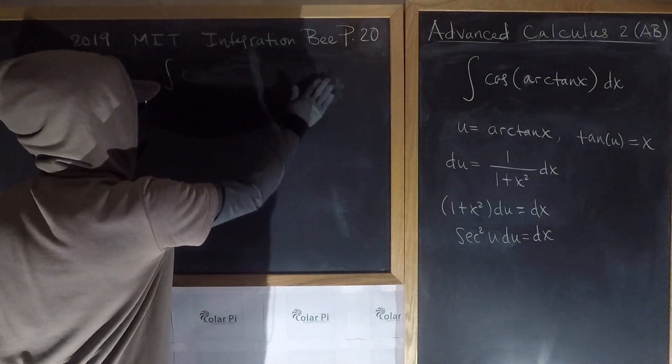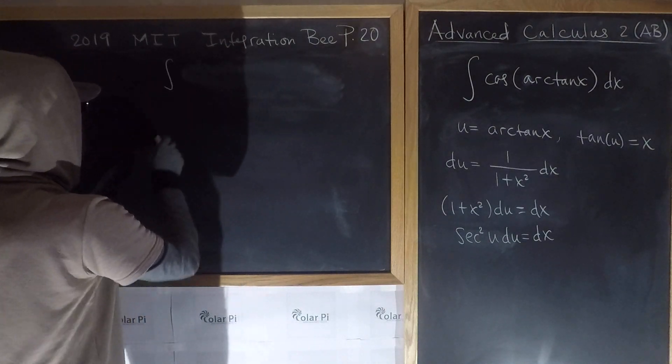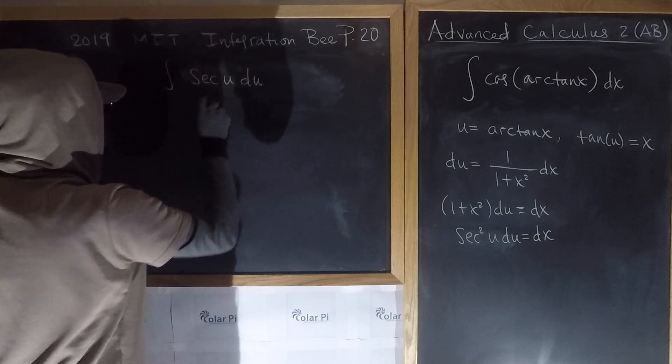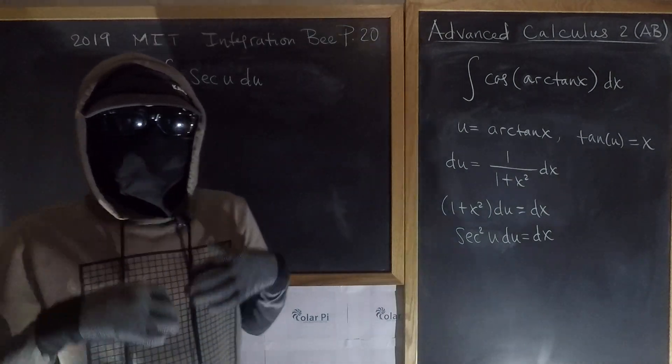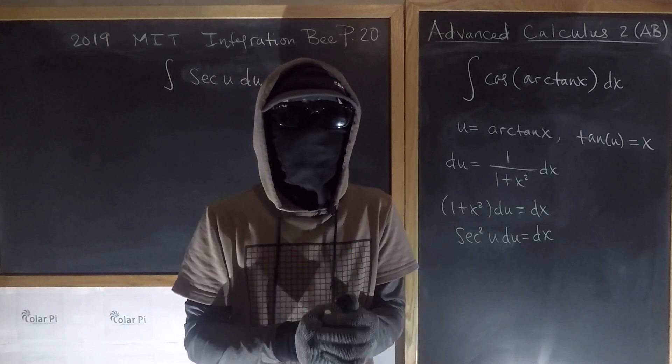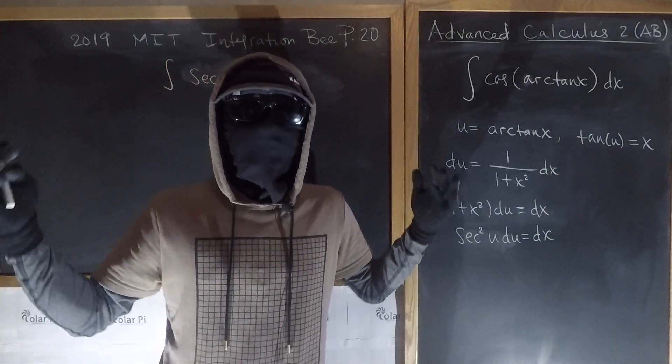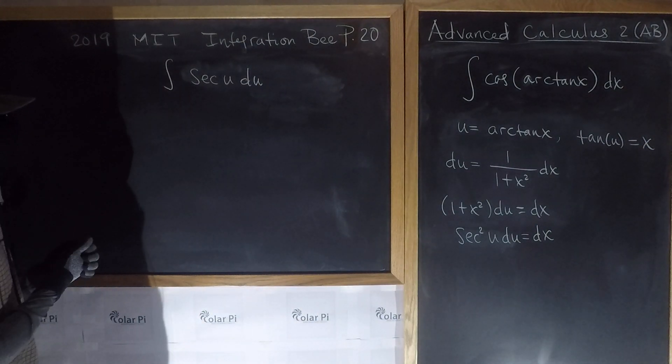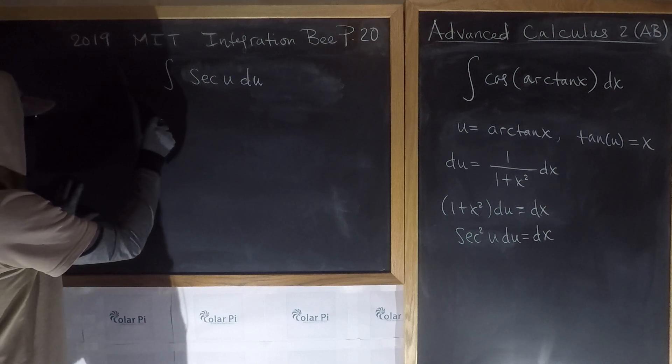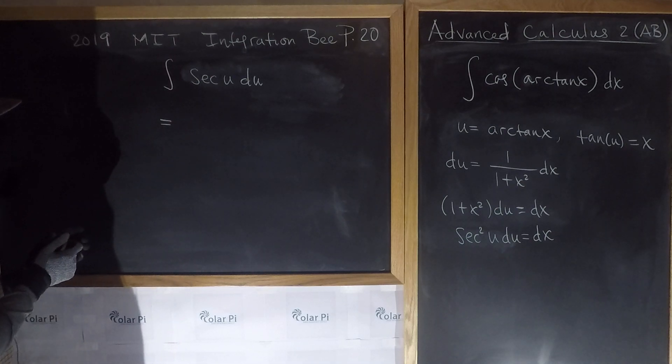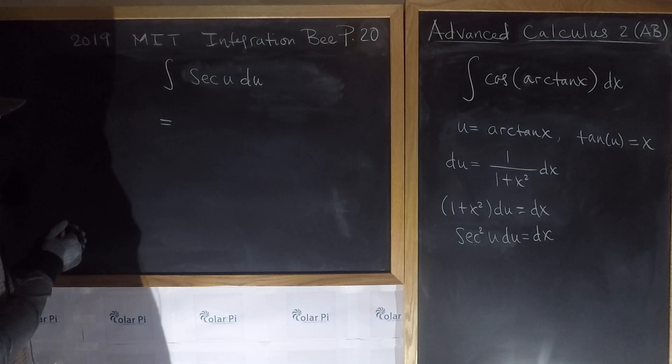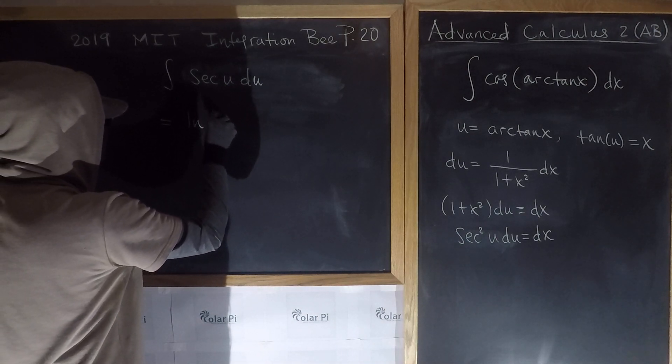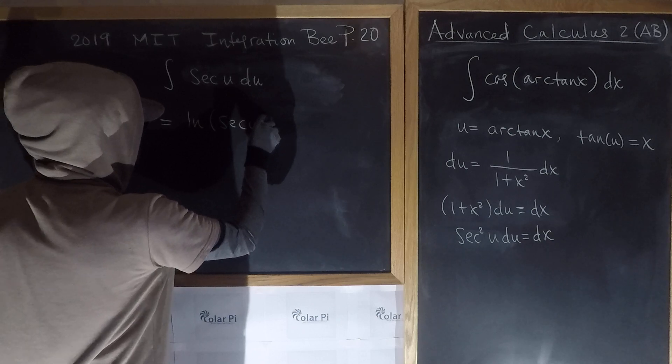Which is sec(u) du. All right, so we have sec(u) du. Now in a video series called Important Integrals I do a number of important integrals, one of which is sec, and I'll link that video below. But I'm not going to show you how to do this here. There are a few ways of doing it and they're all fun, but it is, if memory doesn't fail me, the natural log of sec(u) plus tan(u) plus C.